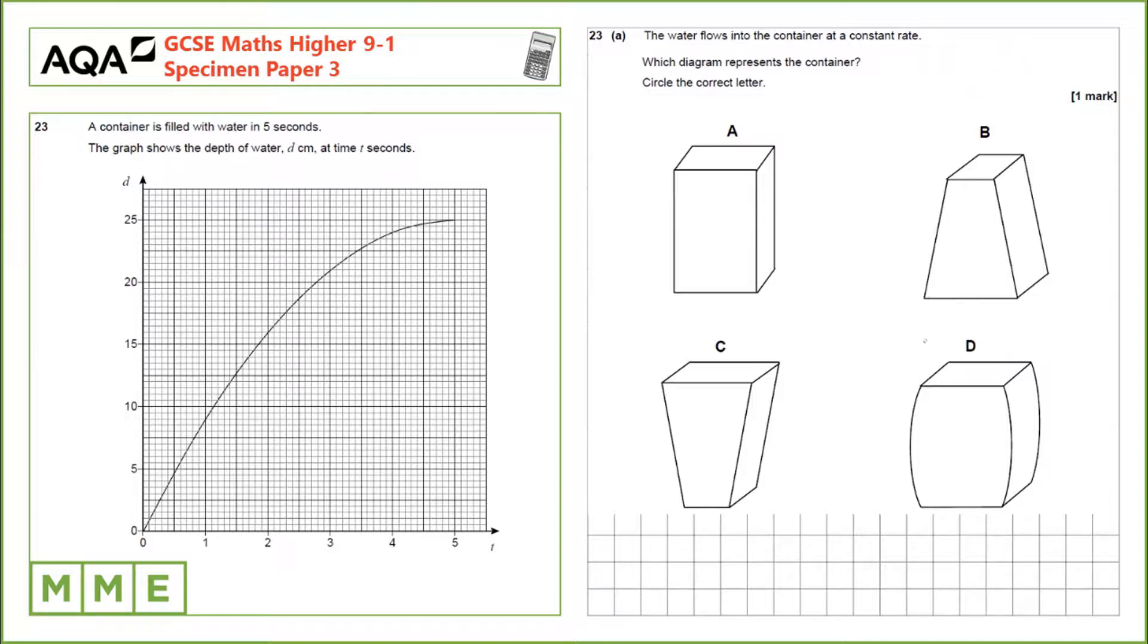So we need to go through these diagrams in turn. A represents a container where the water would come in at a constant rate and we'd expect the depth to be constant. Clearly this graph is not constant. The actual slope of the graph changes. So it's not A.